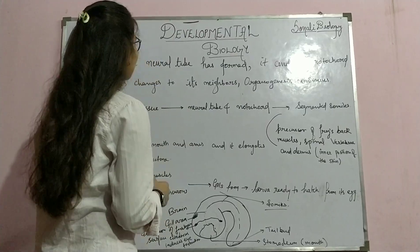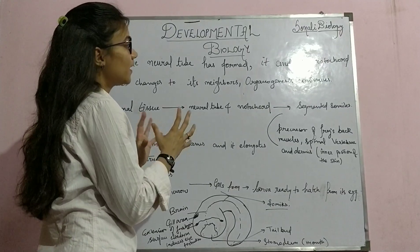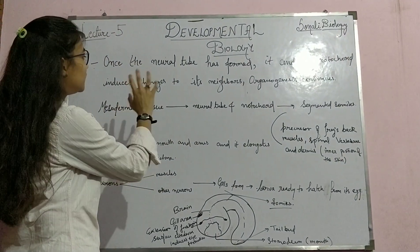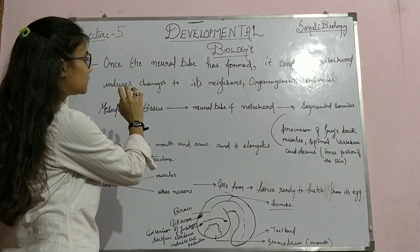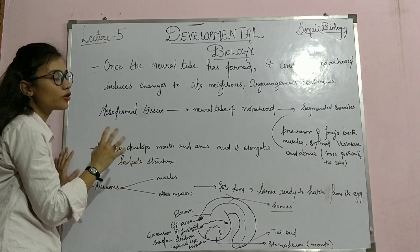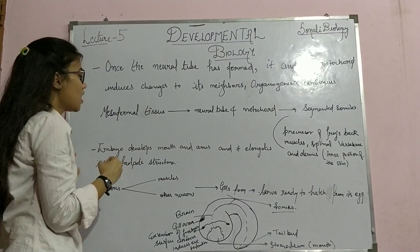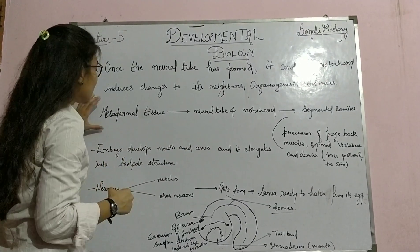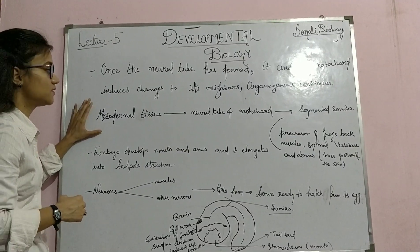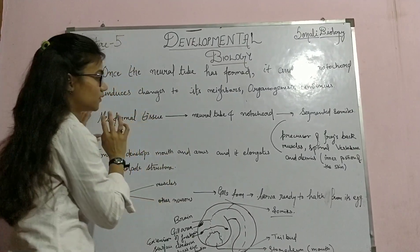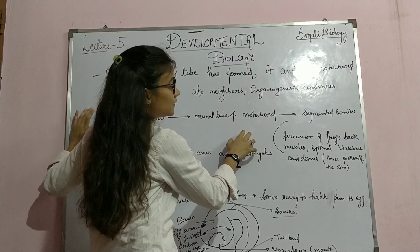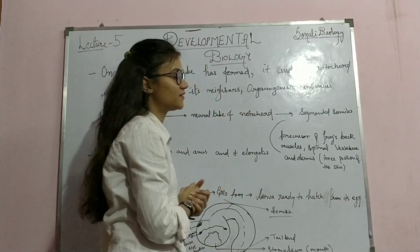Now the neural tube and the notochord are already formed. They induce changes in their neighbors and organogenesis continues. The neighboring mesodermal tissues or cells will give rise to neural tube and notochord support, and they will form segmented somites.